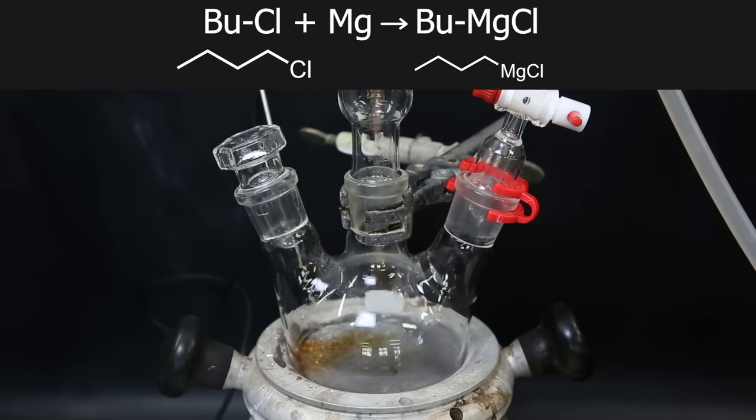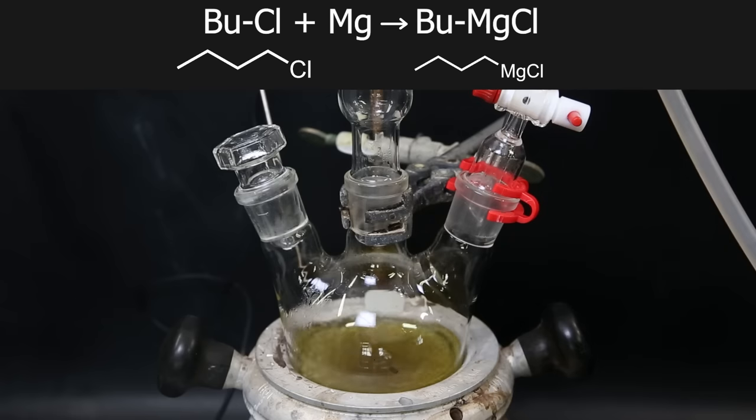In this reaction, the Grignard reagent is prepared. The magnesium will react with the 1-chlorobutane to form the Grignard reagent butyl magnesium chloride.